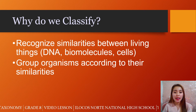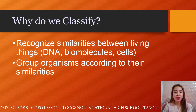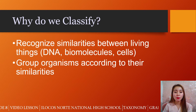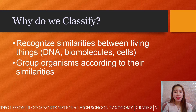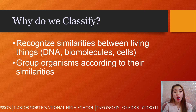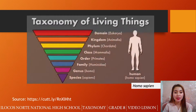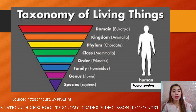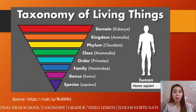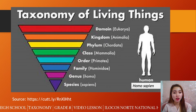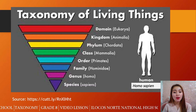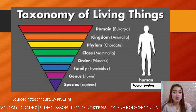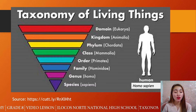So why do we classify? To recognize similarities between living things — their DNA, biomolecules, or cells — and to group organisms according to their similarities. The taxonomy of living things includes the following levels: domain, kingdom, phylum, class, order, family, genus, and species. These are the levels of classification.